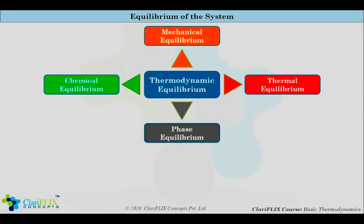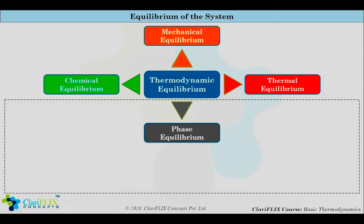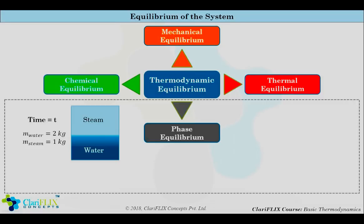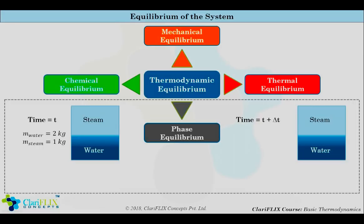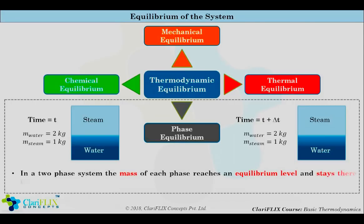Now let us look at the third equilibrium called phase equilibrium. At time T seconds, consider a two-phase system having water and steam, where mass of water is 2 kg and mass of steam is 1 kg. After certain time T plus delta T, if we look at the mass of water and mass of steam, they are the same. So in a two-phase system, when the mass of each phase reaches the equilibrium level and stays there, the system is said to be in phase equilibrium.